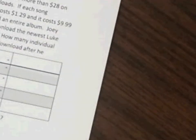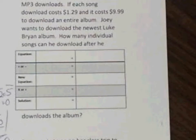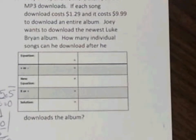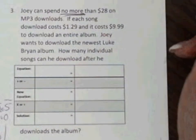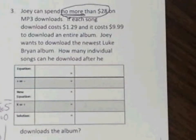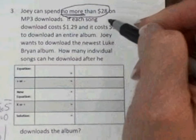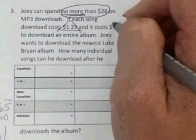Number three: Joey can spend no more than $28 on MP3 downloads. If each song downloaded costs $1.29, and it costs $9.99 to download the entire album, and Joey wants to download the newest Luke Bryan album, how many individual songs can he download after he downloads the album? Let's mark our coefficient, constant, and total. 'No more than' — underline that because it's important for deciding the inequality sign. $28 is our total. 'Each song' — each and every are keywords for the coefficient — so $1.29 is our coefficient, and $9.99 to download the whole album is our constant, so we'll square that.